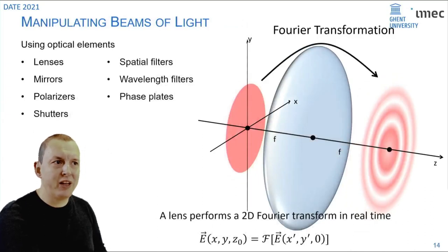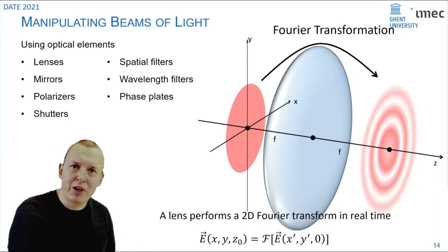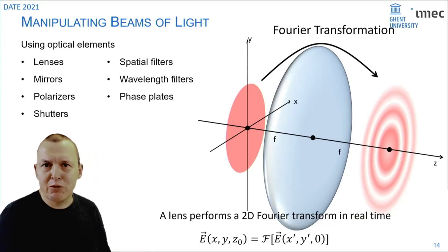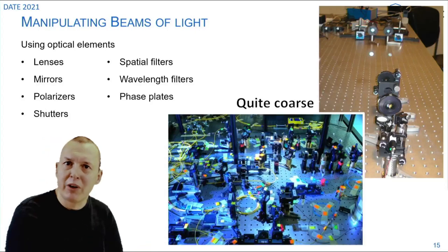That's for instance what you can do with a lens. If you add a lens in the path of the beam of light you're now performing a real-time Fourier transformation between the input and the output plane, the two focal planes of the lens. So you can stack these elements together to make more complicated information processing.